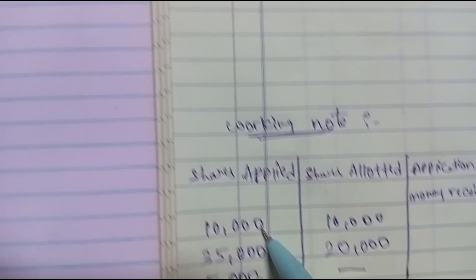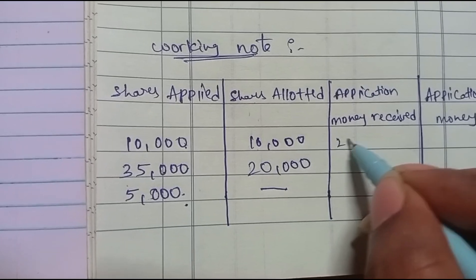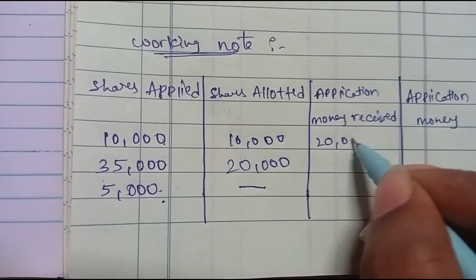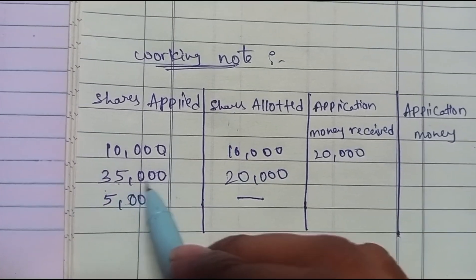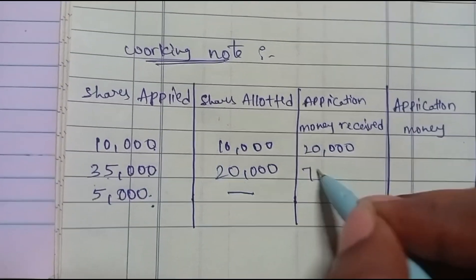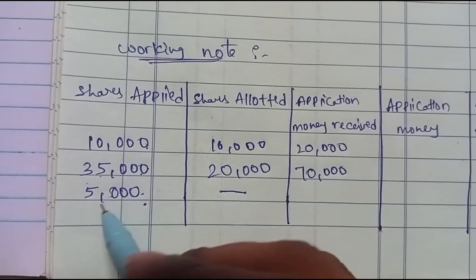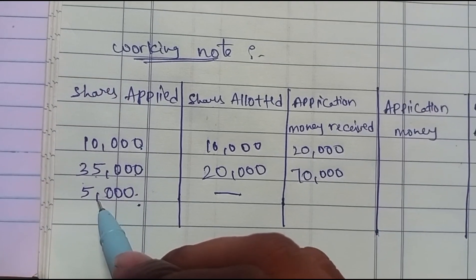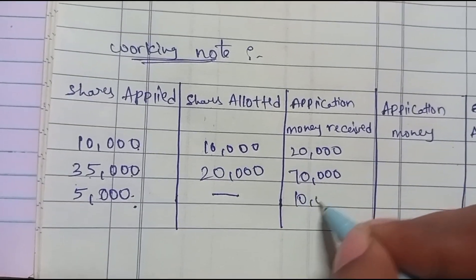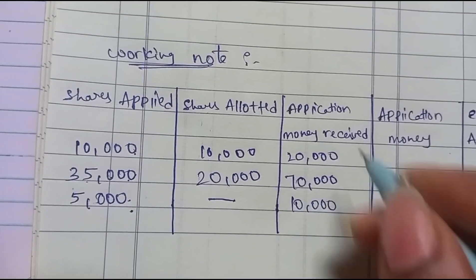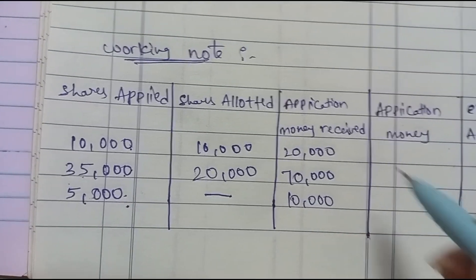Now for the calculation of application money received: 10,000 shares into 2 rupees is 20,000. 35,000 shares into 2 rupees is 70,000. And 5,000 shares into 2 rupees is 10,000. The total application money received is 1,00,000 rupees.